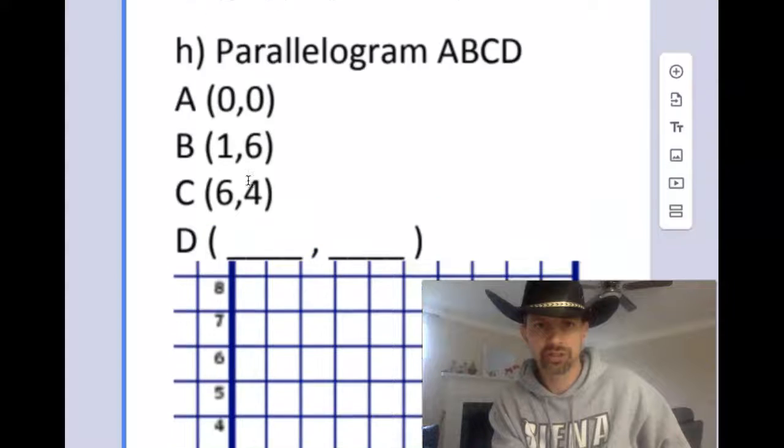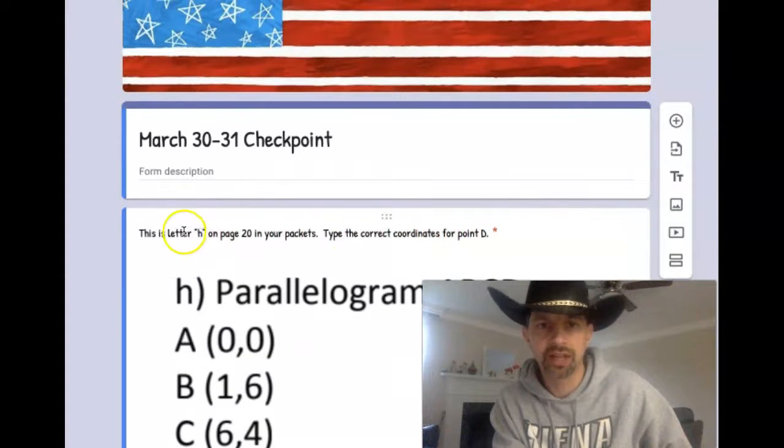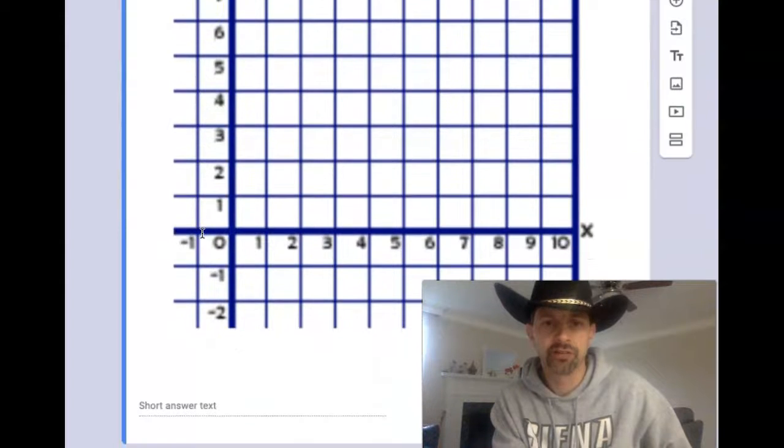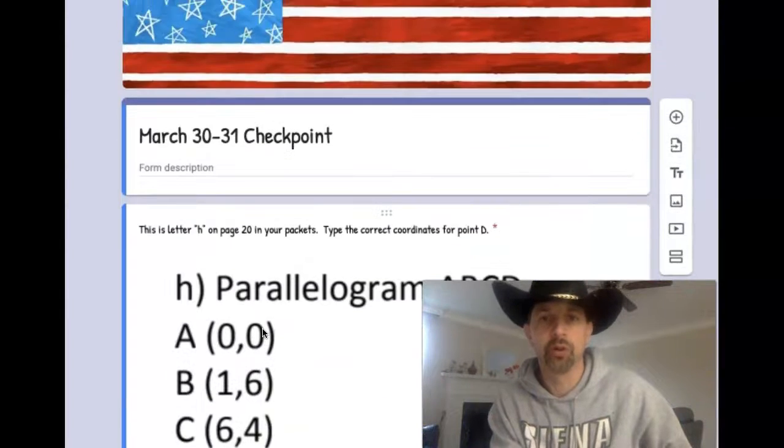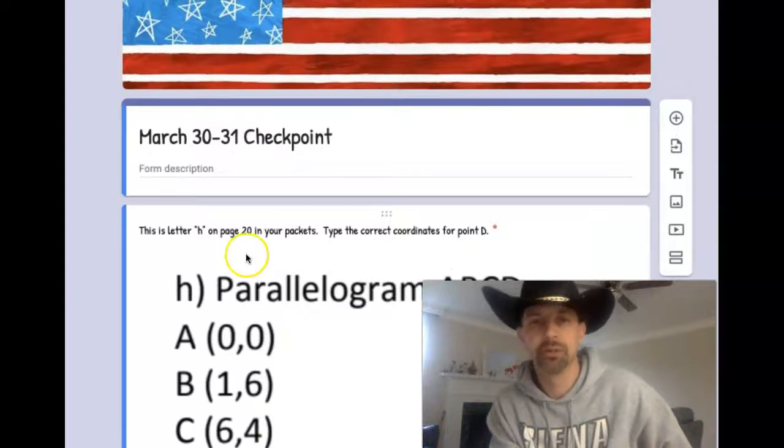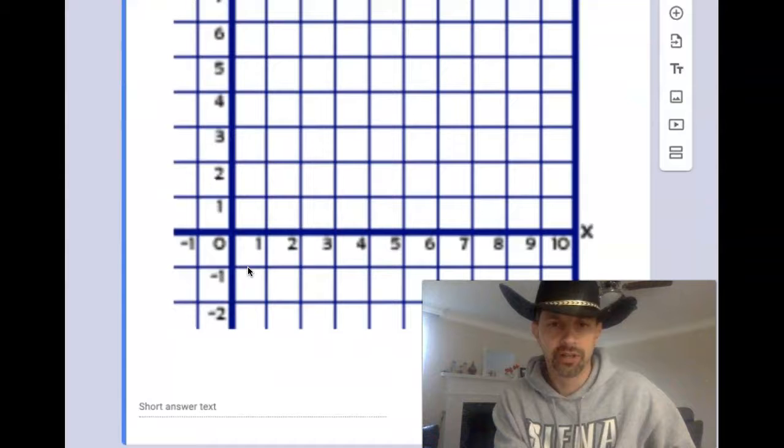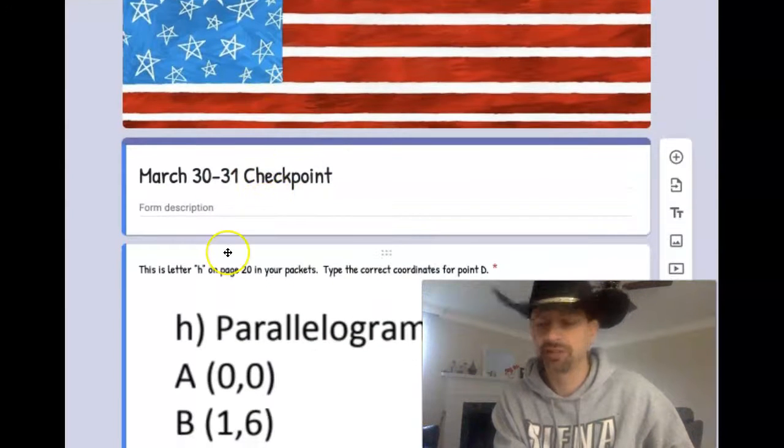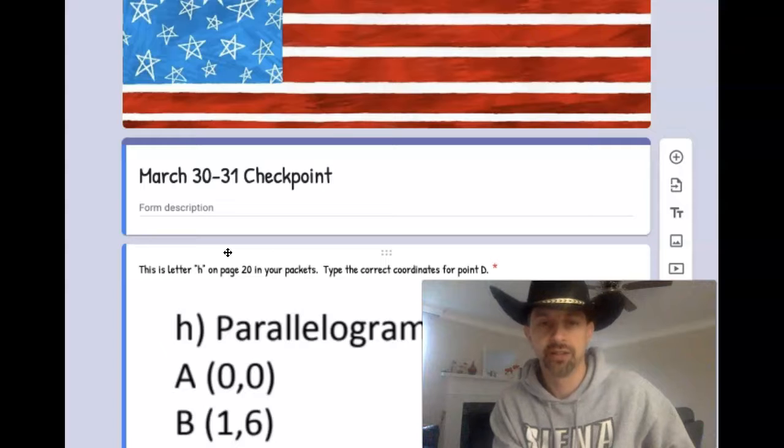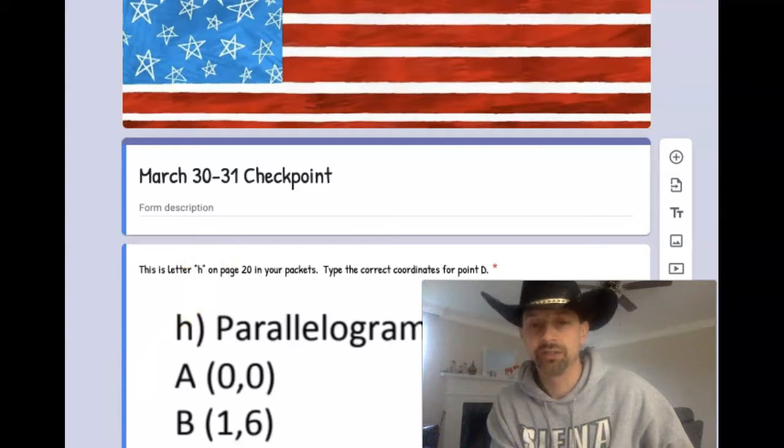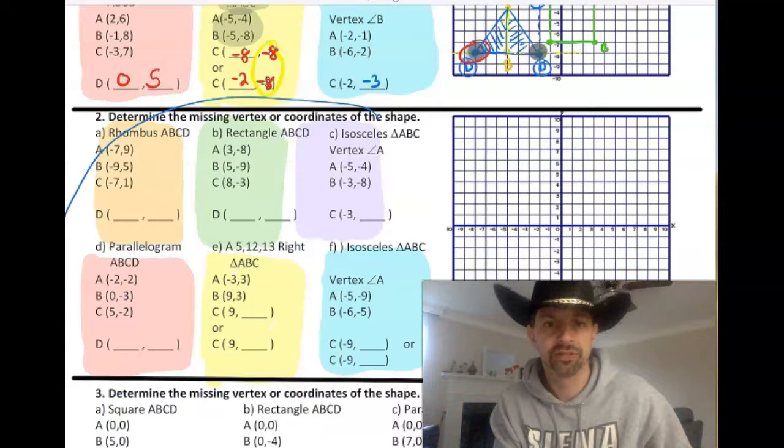So if you look on Google Forms or on Google Classroom where this form is, you will see this one question, which comes off of page 20 in your packets, letter H. And then all you have to do is type the answer down there at the bottom. And we will know whether you are doing well or need a little bit more help on this. And there's actually another question at the bottom that says, if there's any concerns, let us know. So make sure you do this after you try pages 19 or 18 and 19.